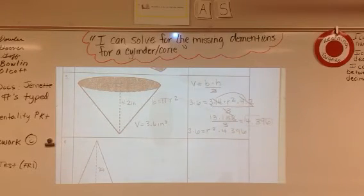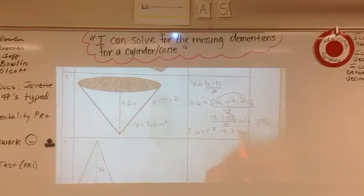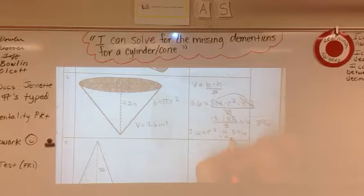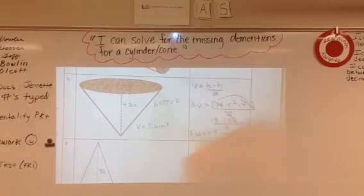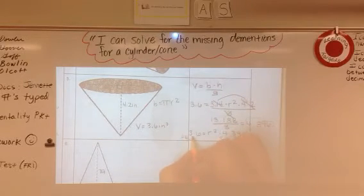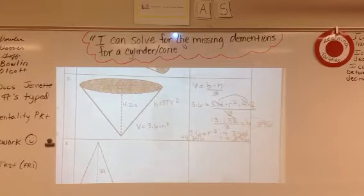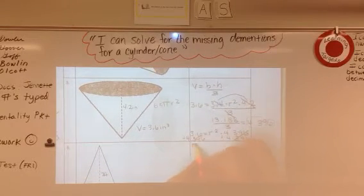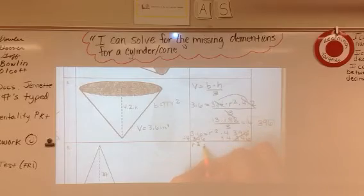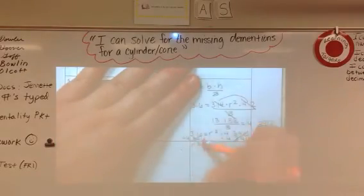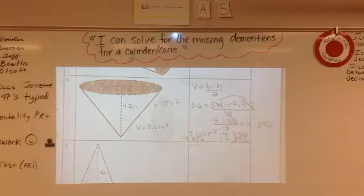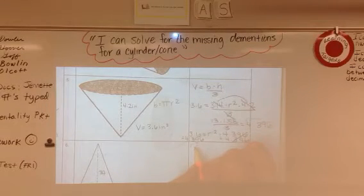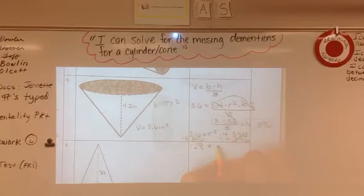So just like in our other problem, we've got to get r squared by itself. So we have to, instead of multiplying, we're going to divide. So I'm going to divide 4.396, divide by 4.396. And you should end up with r squared. Oops, sorry, let me flip that around. We should get 0.8 equals r squared.